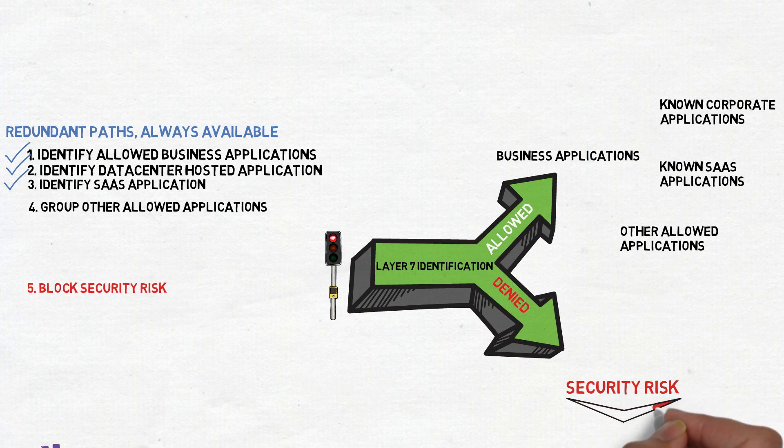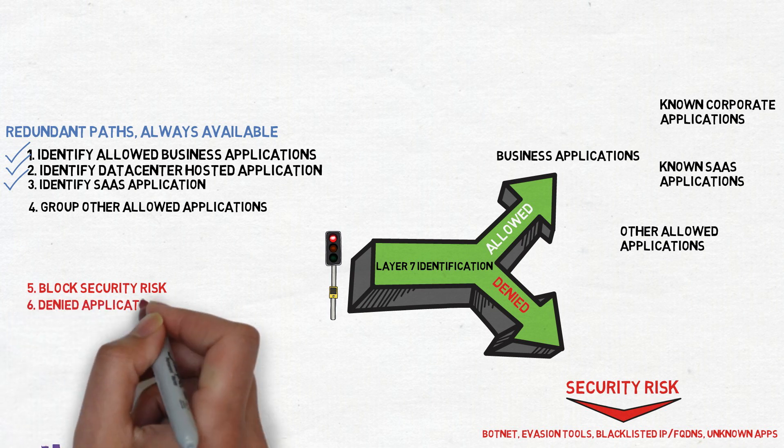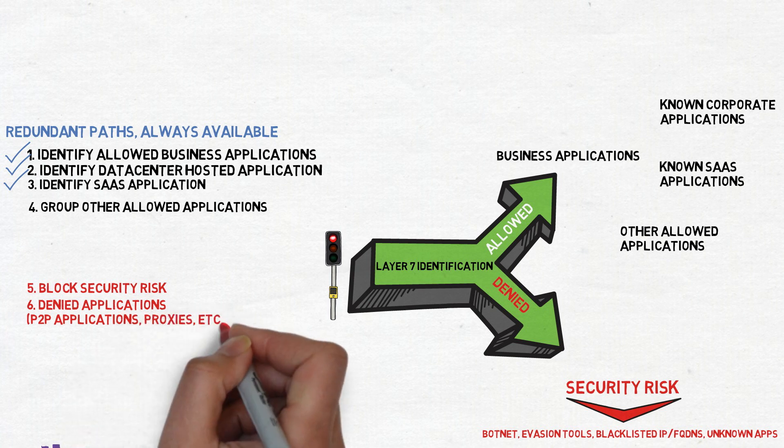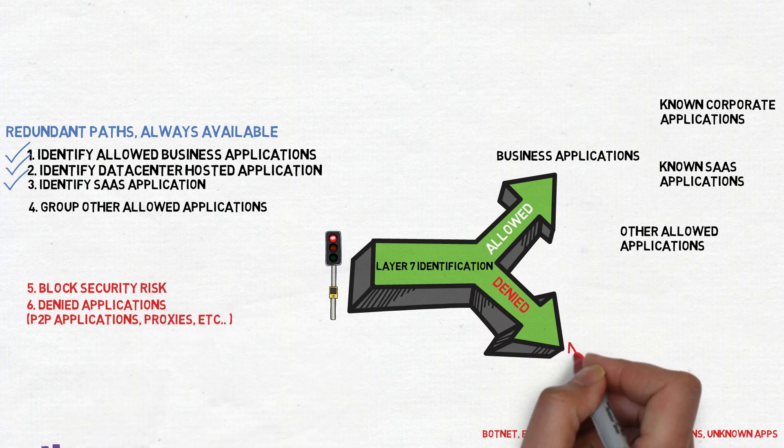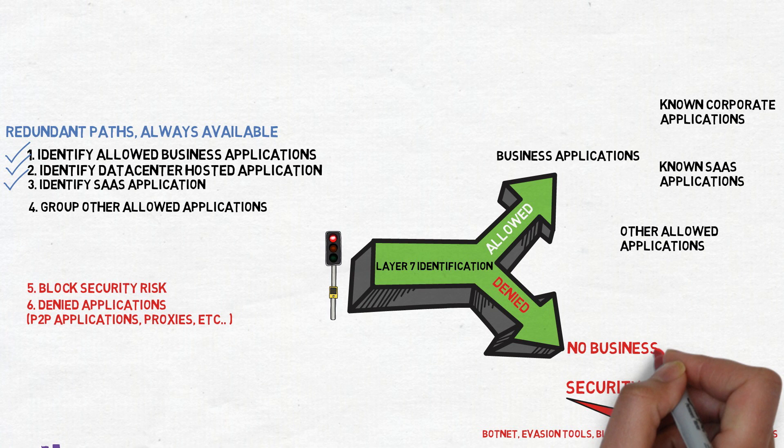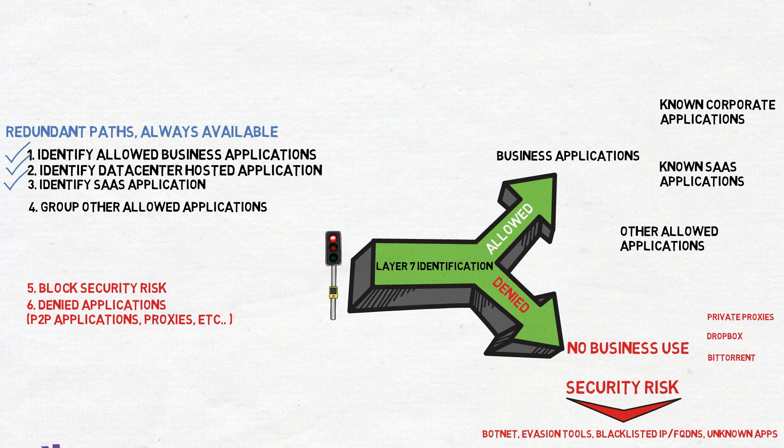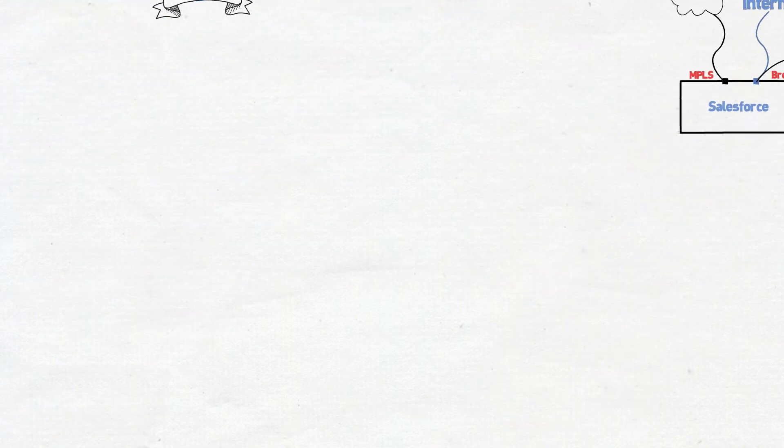SD-WAN products with built-in security will offer layer 7 identification of potentially risky application. This category could include things like botnet activity, security evasion software, proxy avoidance, and many more. We'll also want to create an application group for applications that we know should never be used. For example, if your company is using an internal file share, we can block all other forms of file sharing like Dropbox and Google Drive. Ultimately, these unwanted categories should be blocked before ever leaving the site. If your SD-WAN does not support blocking, make sure it's being black-holed or sent off to the security device for more inspection.